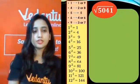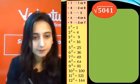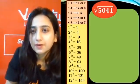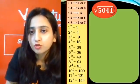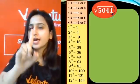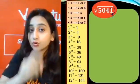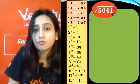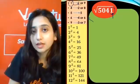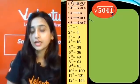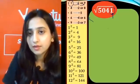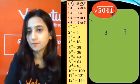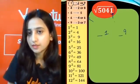Let's look at one more question. Step one: look at the unit place — it is 1. If the unit place is 1, refer to the table. The answer unit digit will be 1 or 9. So in the answer, the unit place will be either 1 or 9. Then, the next step is the tens place.